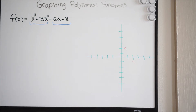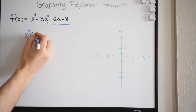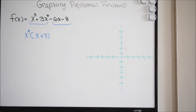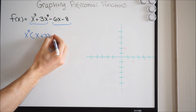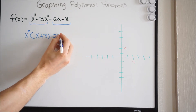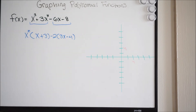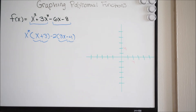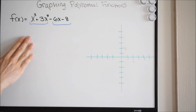Looking at the first two terms, I have a greatest common factor of x squared, and that means I'll have x and then plus 3. Looking at my last two terms, they have a greatest common factor of negative 2, and then I'll have 3x and then negative 4. Well, looking at this, our common factor is not the same. So since it's not the same, we can't use factoring by grouping here. So we're going to have to rely on the rational root theorem to get the zeros of this function.